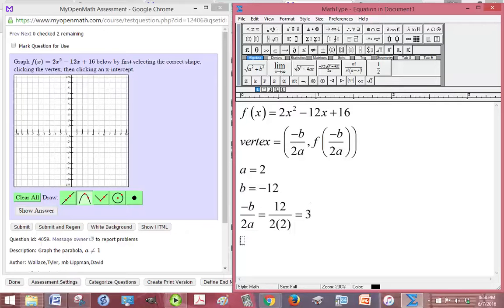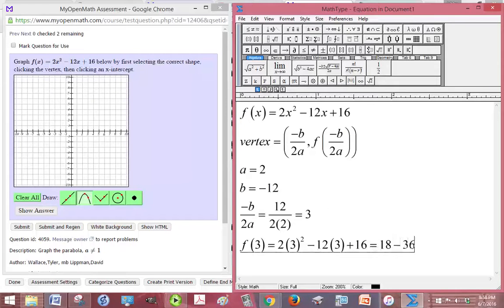Now to get the y value, all we need to do is plug that into the function. So f of 3 is equal to 2 times 3 squared minus 12 times 3 plus 16. So that's going to be 2 times 3 squared is going to be 18 minus 36 plus 16. That's negative 18 plus 16, which is negative 2. So our vertex is 3, negative 2.